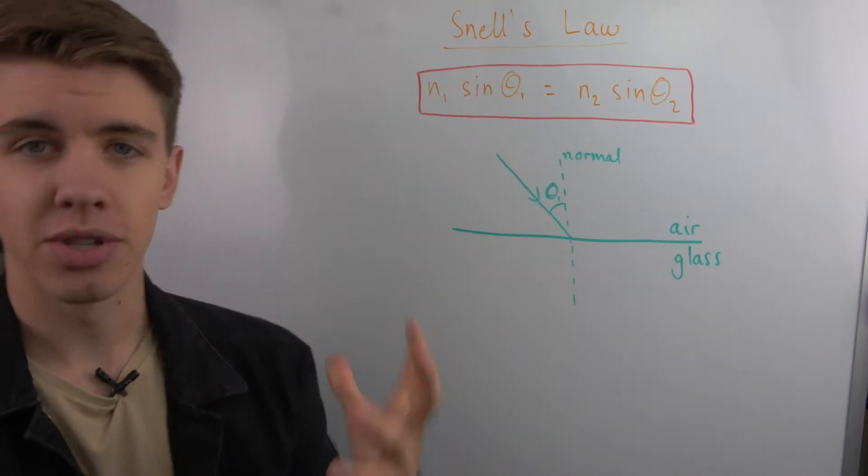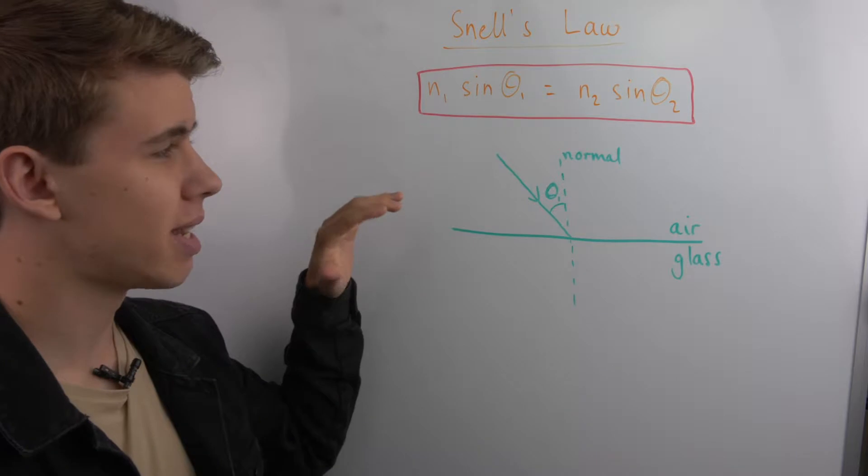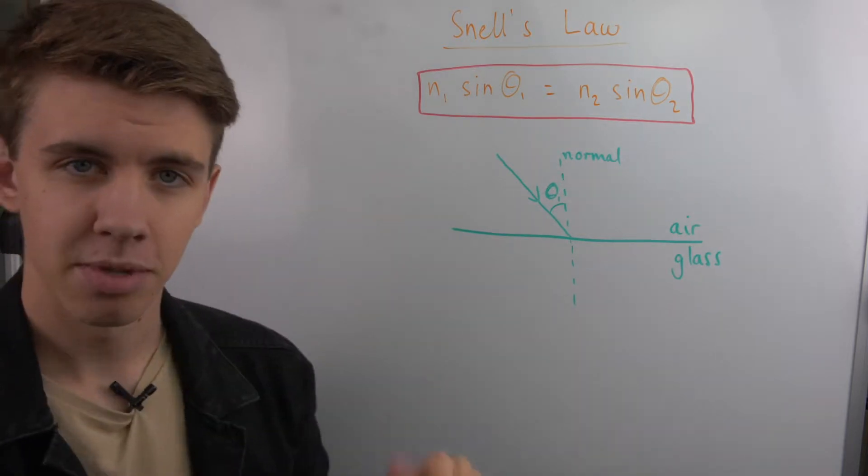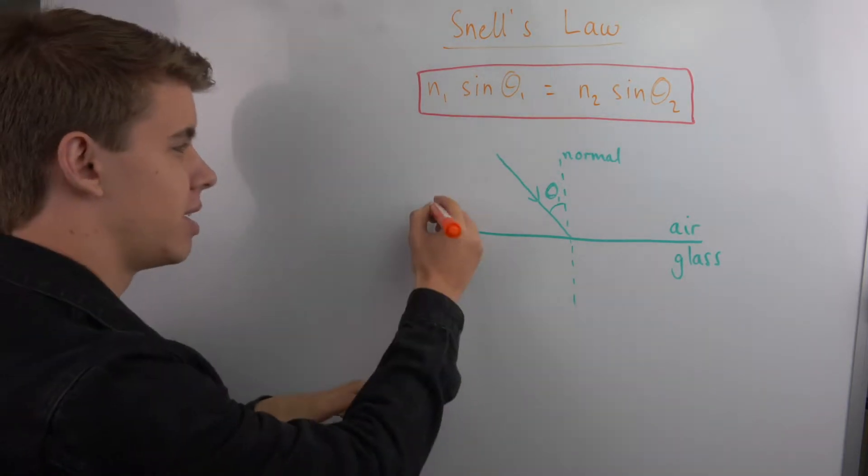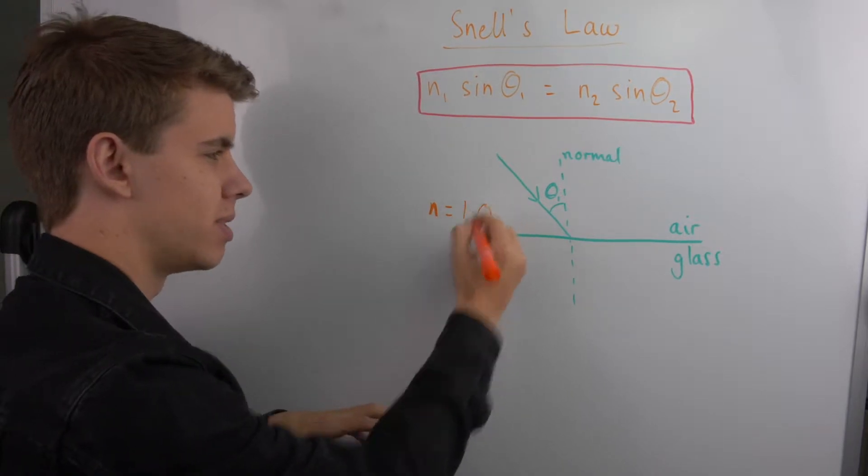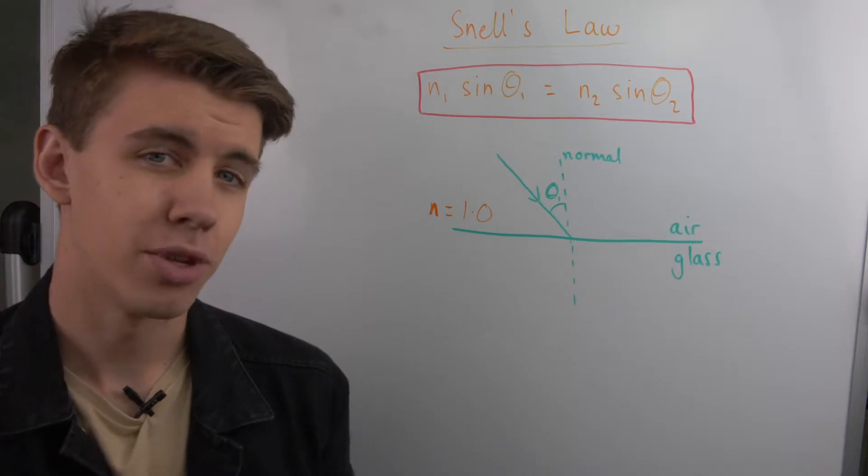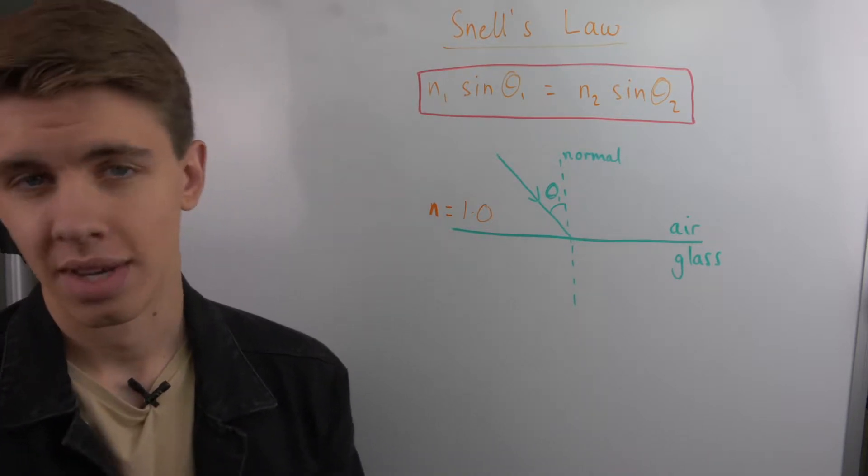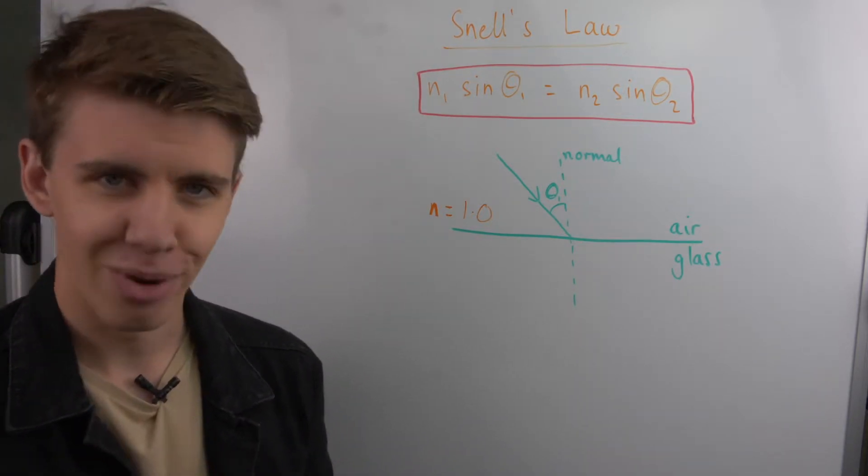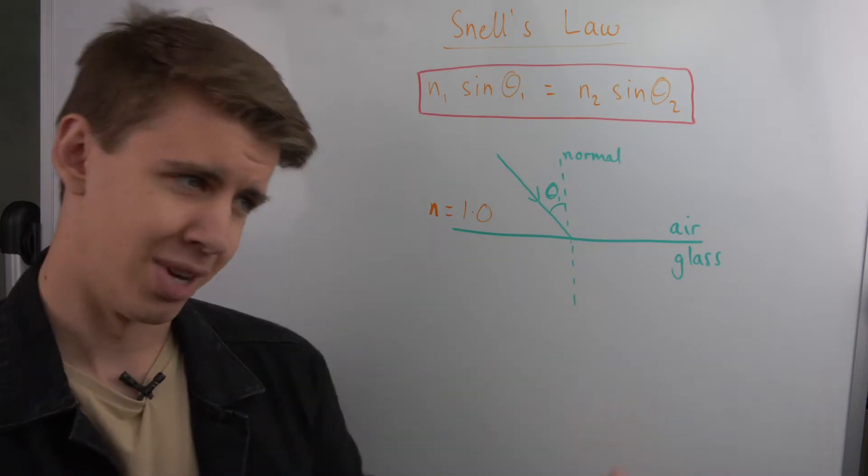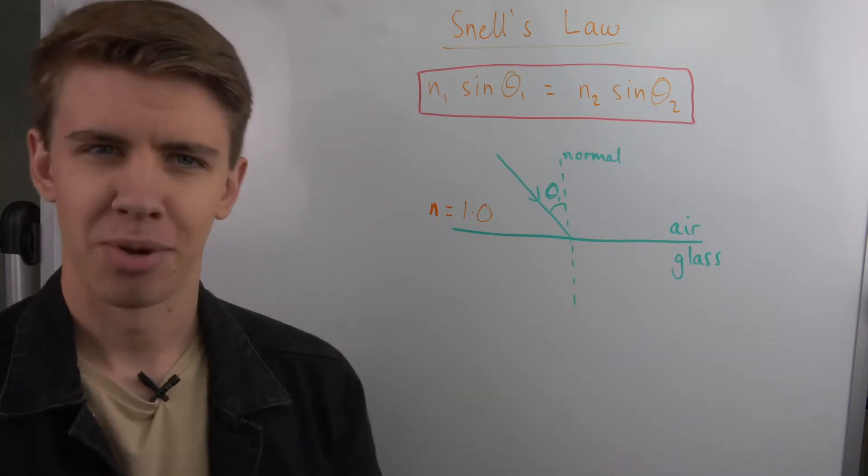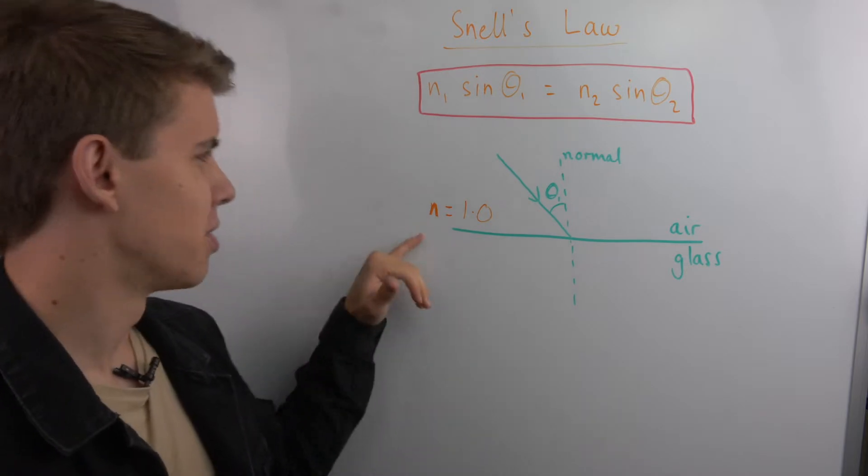In order to apply this, the things you need to know are what the refractive indices are of these mediums. Air has a refractive index of 1.0. That one you have to know. That's not too difficult of a number to memorize given that we're memorizing all the masses of protons and electrons and stuff.